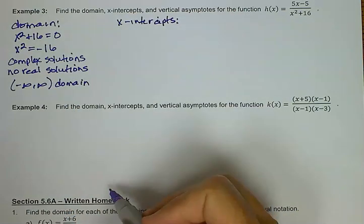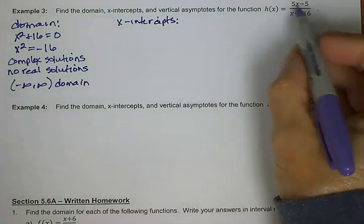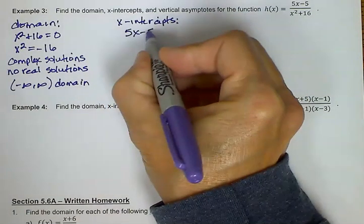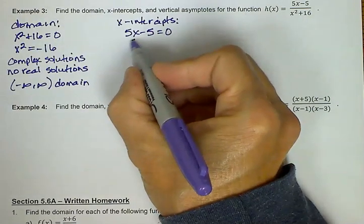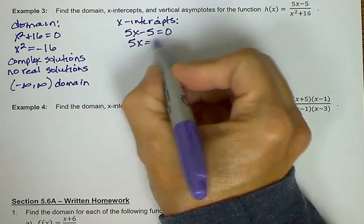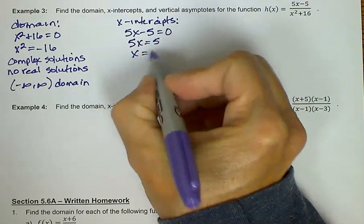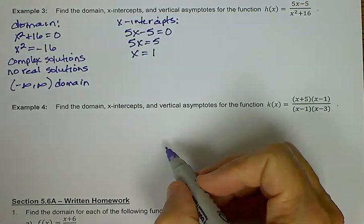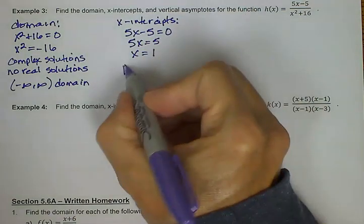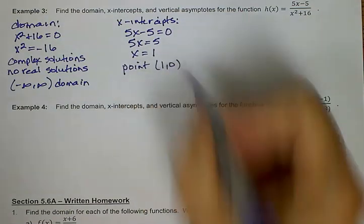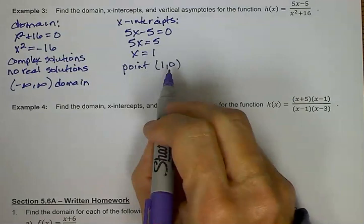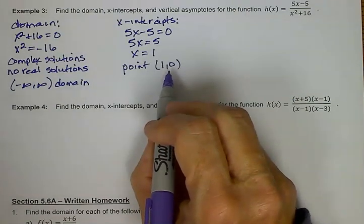Now let's think about our x-intercepts. We're going to take the numerator and set that equal to 0. And we can just solve this for x. So we could factor it, or we can just solve it this way. We end up with x equals 1, so we would have our x-intercept as the point 1, 0. And that's the only place that the graph is going to cross or touch the x-axis.